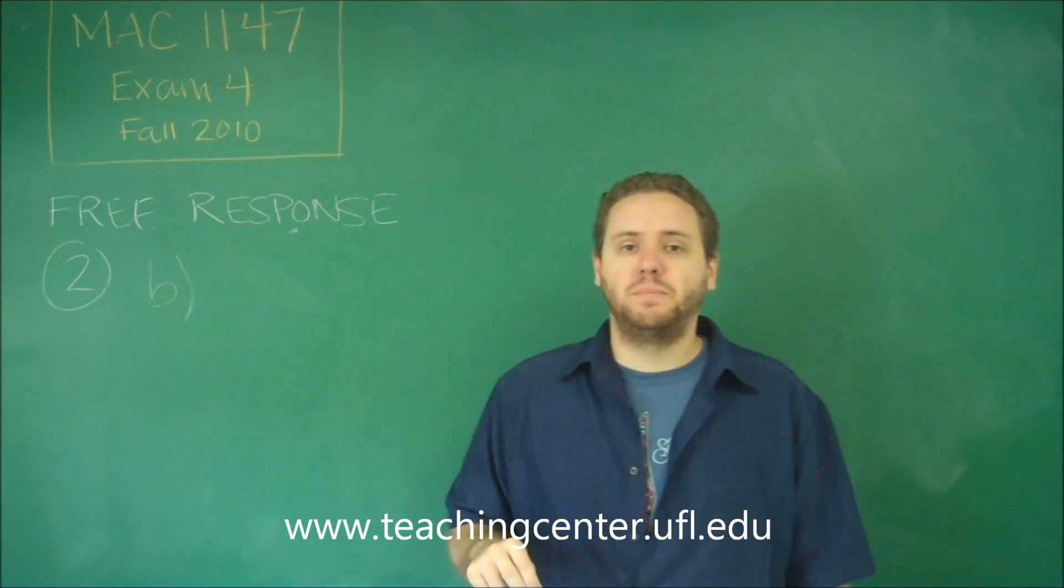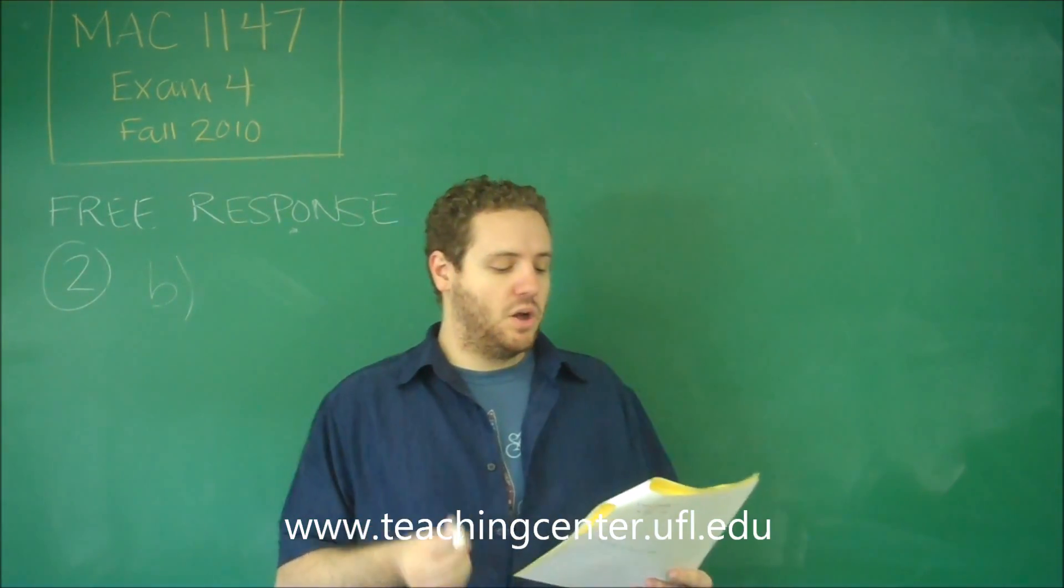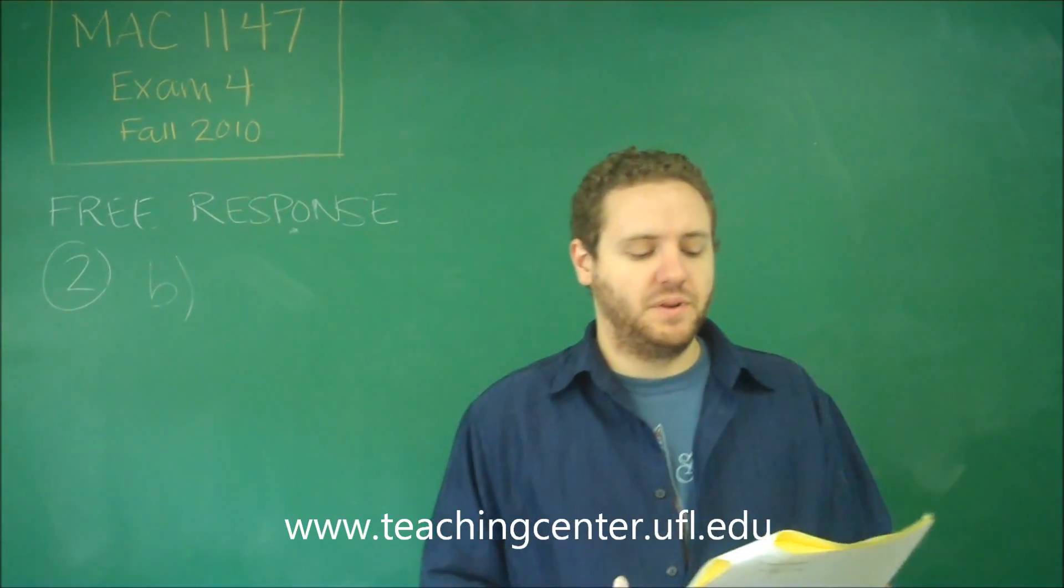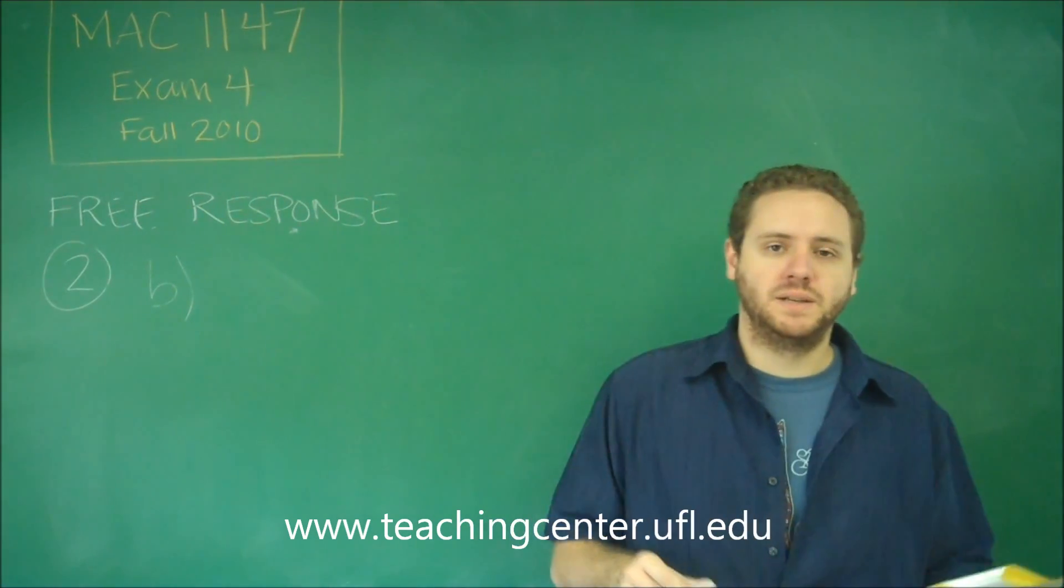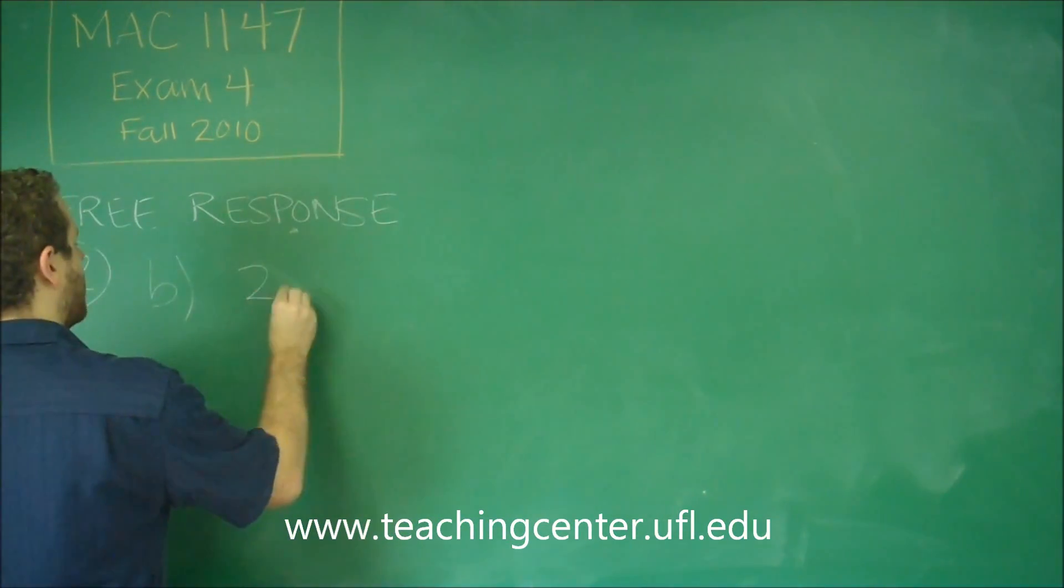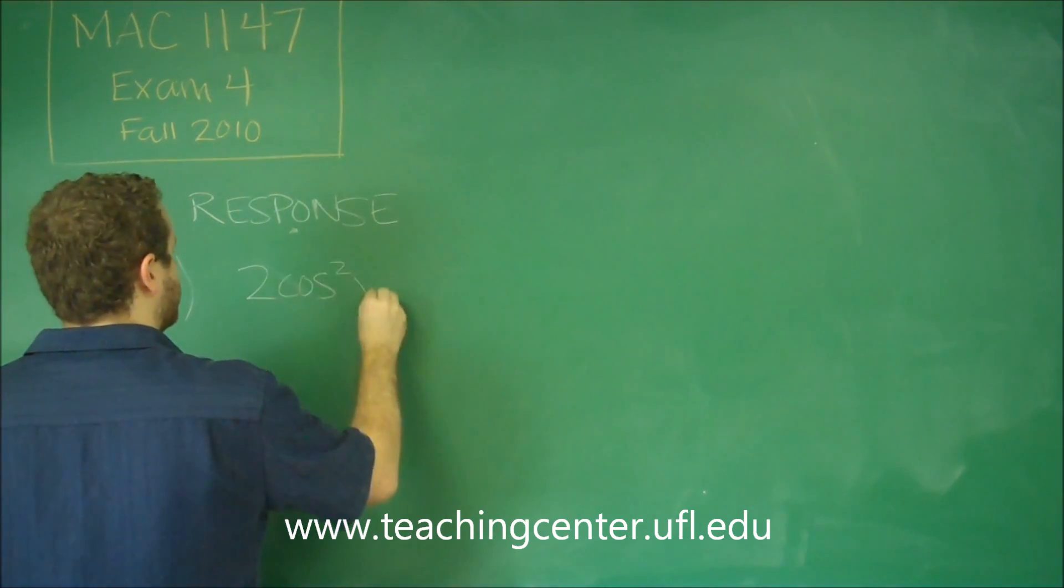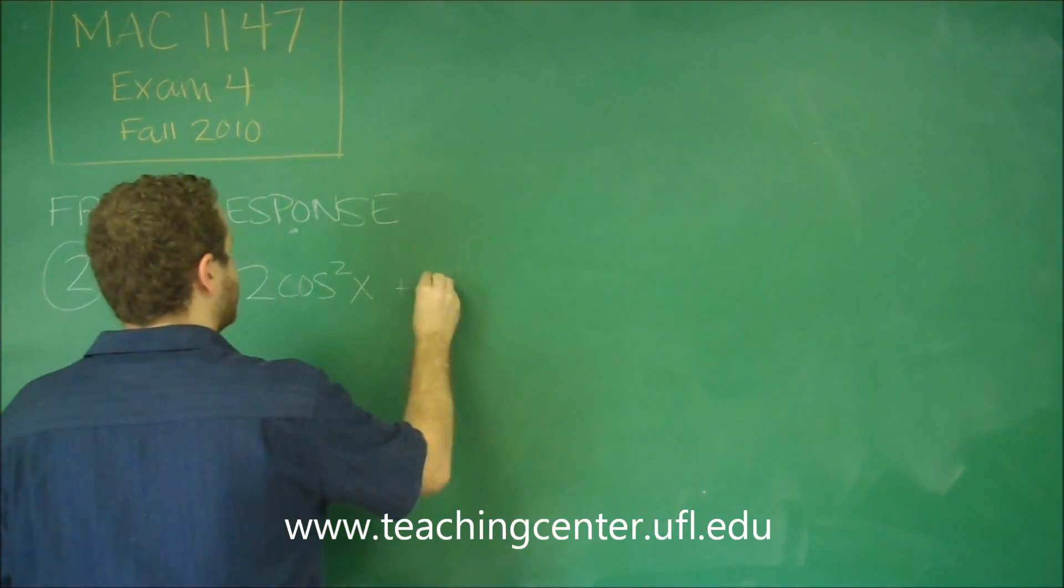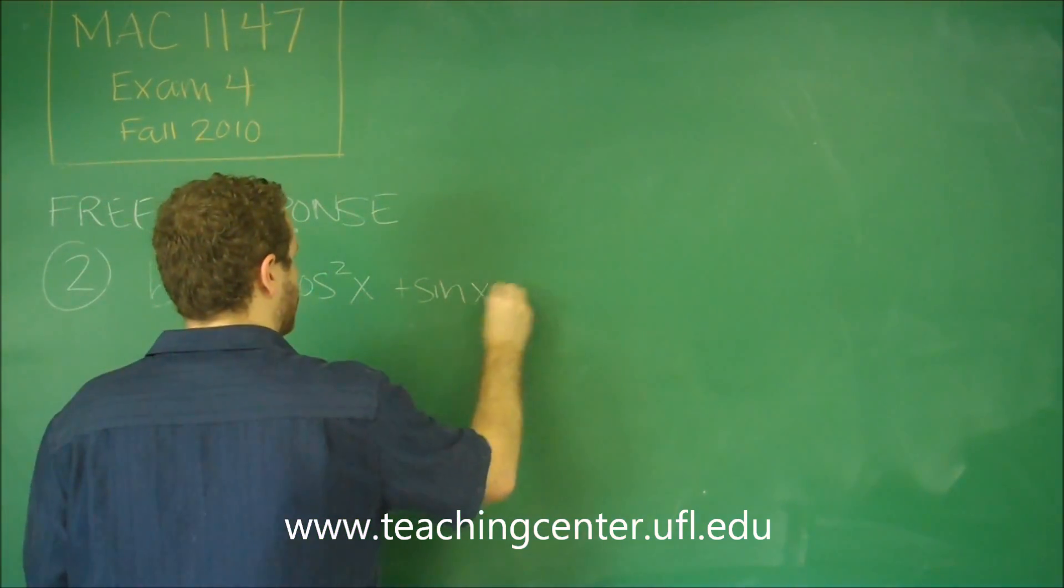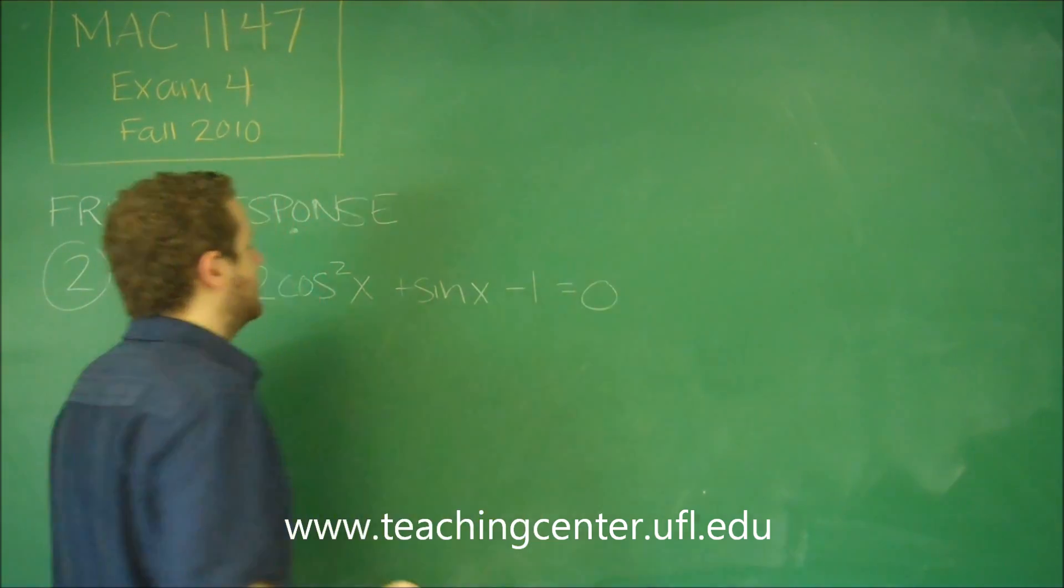Problem 2 Part B is another trig equation, but this one's a little bit different, because if you notice, we have a cosine squared and a sine x. So this one we have to treat a little bit differently than the previous one, because the problem is, in order to solve this, we need to combine these trig functions somehow.